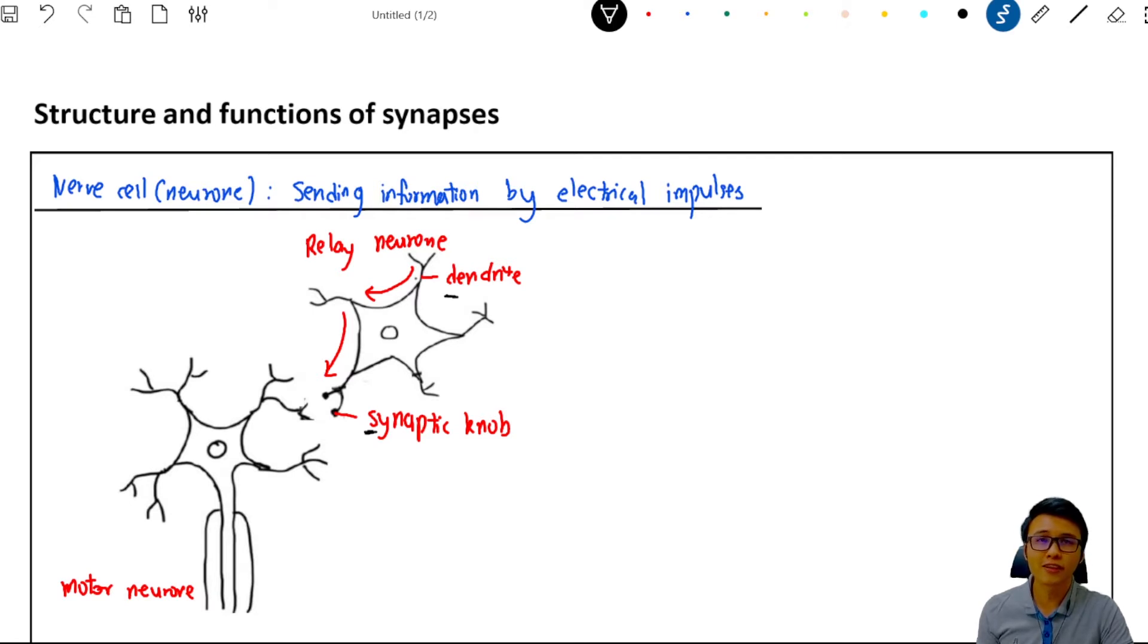Now when the electrical impulse comes to the synaptic knob, it's facing one problem. There is a very small gap here. This electrical impulse cannot just jump over to the next cell. So how does the relay neuron transmit the information to the motor neuron? Then we are going to zoom into this place.